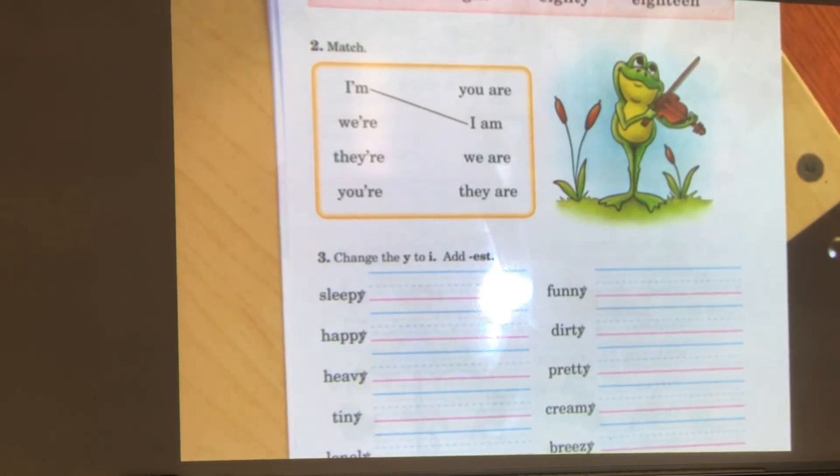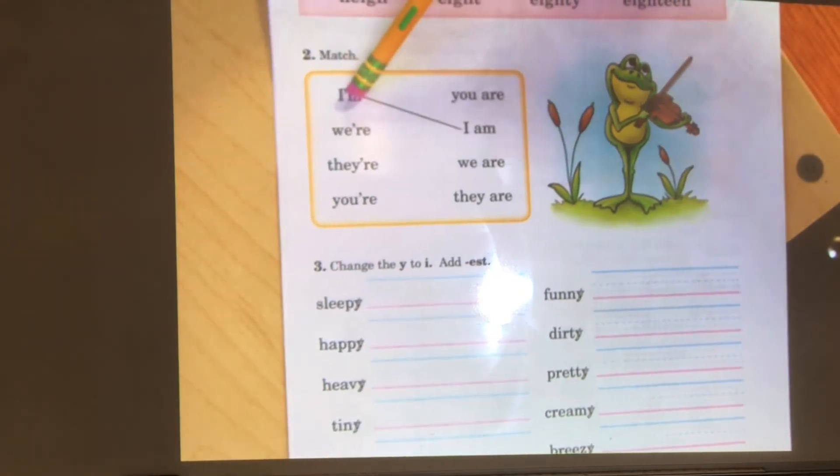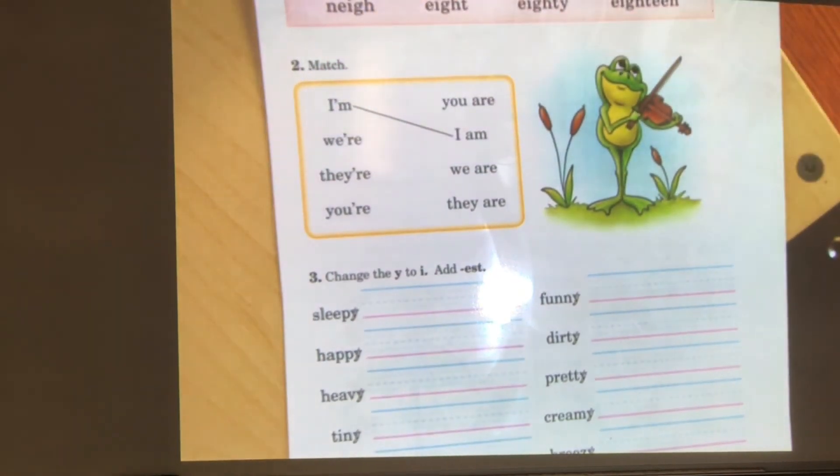Section two says match. You're going to match the contraction with the two-word it stands for. For example, I'm, I apostrophe M, means I am. So, you draw a line from I'm to I am. And you're going to match the other contractions with the two-word it stands for.